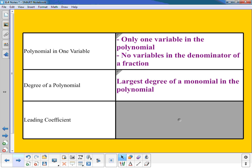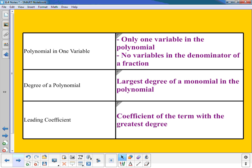And the last one, leading coefficient. The leading coefficient is the coefficient of the term with the largest degree. So the word leading leads you to believe that it's the coefficient in front, because leading means beginning or in front. That is true if our polynomial is written in standard form. So as long as our polynomial is in standard form, then it is the front coefficient. But if it's not in standard form, we need to look for that term that has the greatest degree, and it's our coefficient there.